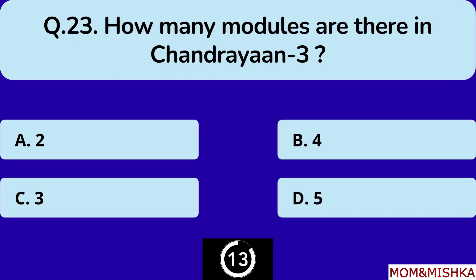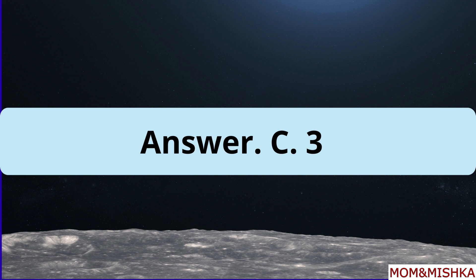How many modules are there in Chandrayaan-3? Three modules, option C.